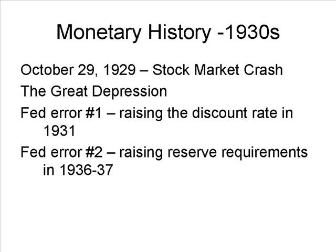The 1930s are often held up as demonstrative of what can happen with poor central bank policy, and some conclude that if we learn the lessons we won't make those mistakes and can have good policy in the future. Coming into the 1930s, there was no consensus on what the Fed should do — either pro-cyclical or counter-cyclical policy. Even if Fed leaders knew what they wanted to do, they hadn't faced any major macroeconomic calamities in the 1920s that needed central bank intervention.